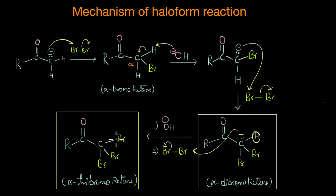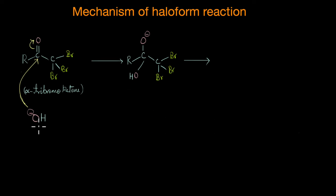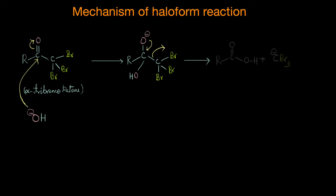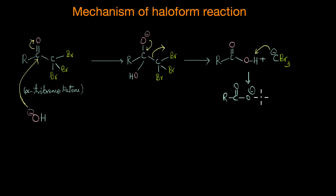In the final step, the hydroxide ion attacks the alpha-tribromo ketone; delocalization of pi electrons gives a tetrahedral intermediate. The C=O bond is restored with elimination of the CBr3⁻ ion, which is a moderately good leaving group, giving a carboxylic acid and CBr3⁻. Since the reaction mixture is still predominantly alkaline, the carboxylic acid is deprotonated by the CBr3⁻ leaving group, giving the carboxylate salt and haloform — in this case, bromoform.